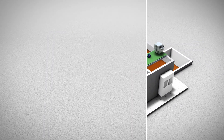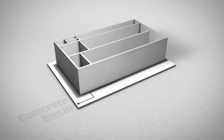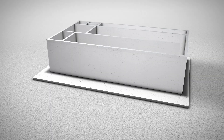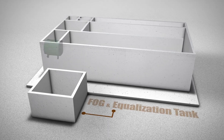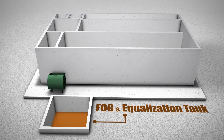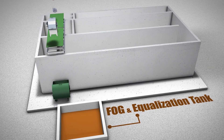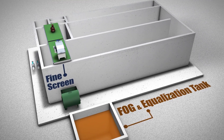We start with civil infrastructure by placing the concrete basin. Next to the pad, we place the FOG and equalization tank. On the concrete pad, we install the electromechanic components.